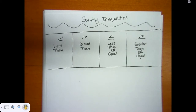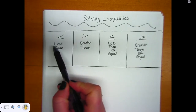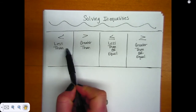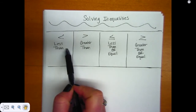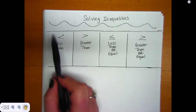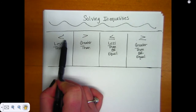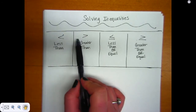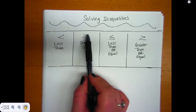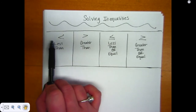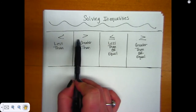I didn't even figure this out until I was actually a teacher. You read words from left to right — well, you're also going to read these signs left to right. So from here to here, your number would be less than. If you had a number here where the mouth would be open, that would be greater than. So this would be less than, and this would be greater than.